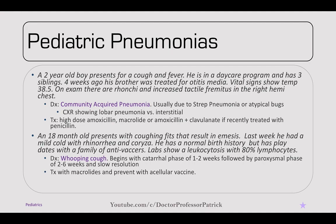An 18-year-old presents with coughing fits that result in emesis. Last week he had a mild cough with rhinorrhea. He has a normal birth history but has playdates with anti-vaxxer families. Labs show leukocytosis with 80% lymphocytes. This is whooping cough, or pertussis. It begins with a catarrhal phase of one to two weeks with rhinorrhea, followed by a paroxysmal phase of two to six weeks with coughing fits resulting in post-tussive emesis and the classic whoop. Treatment is macrolides. Prevention is the acellular DTAP vaccine.